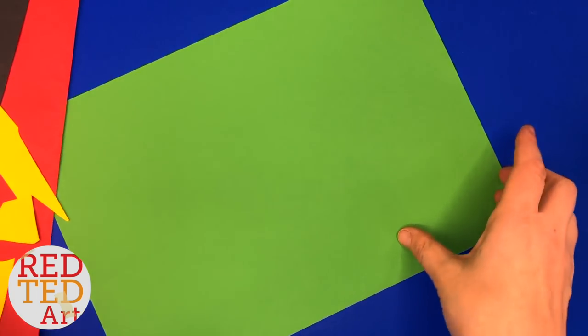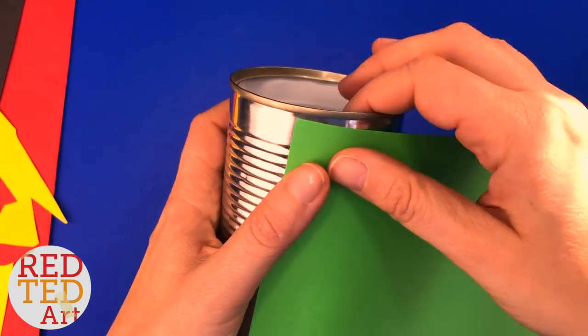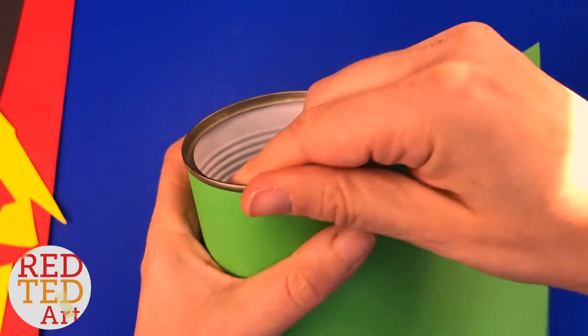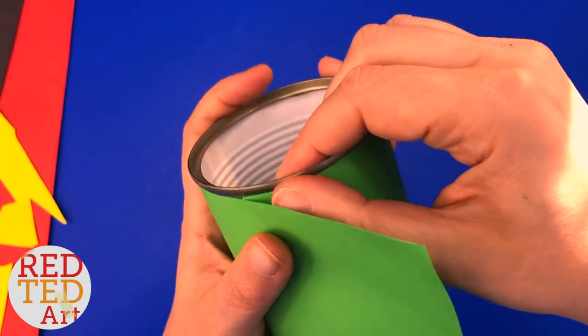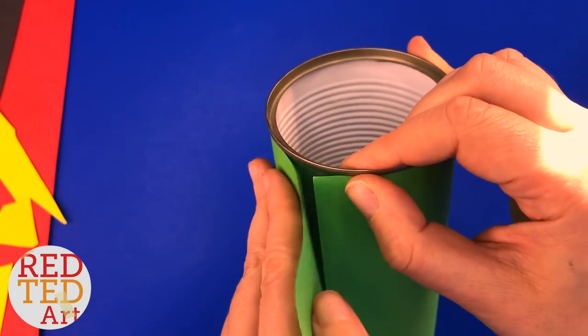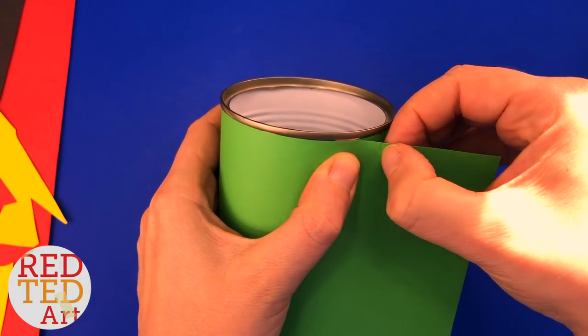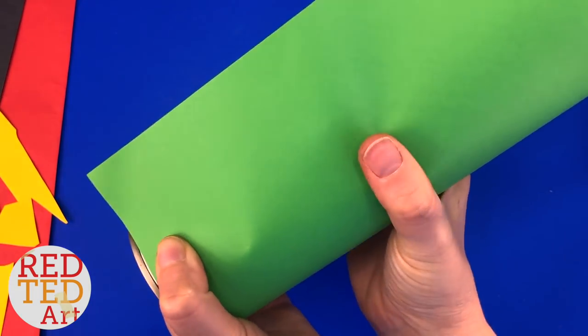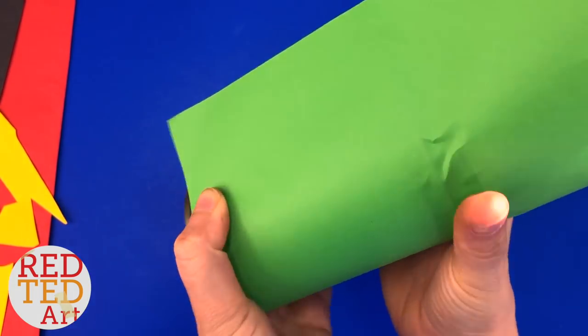So we'll begin with making the main body. Take your tin can, line up your green paper, get it as neat as you can, make a little mark. You can use a pen if you want, I'm going to use my fingers, and then also give the bottom a little squeeze so that you know where to cut.